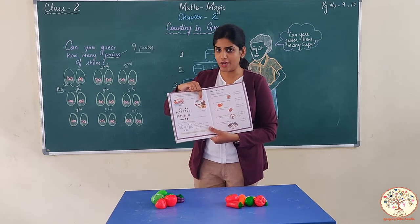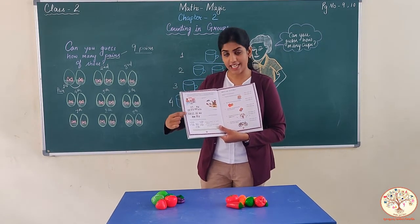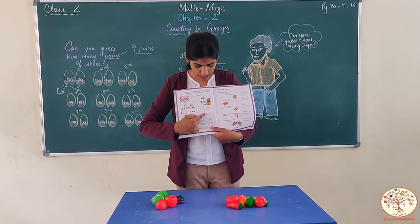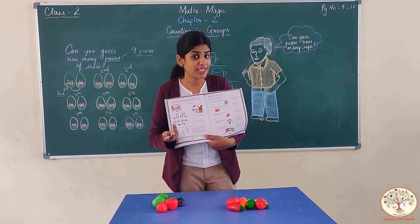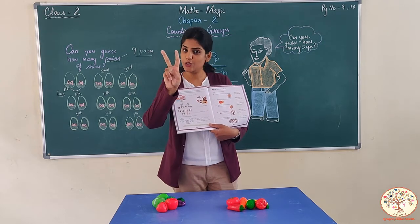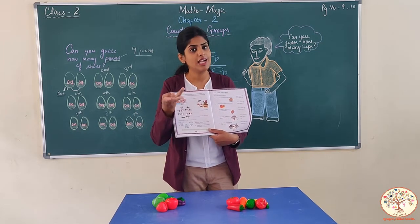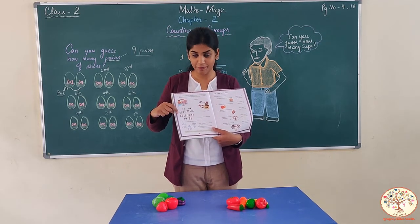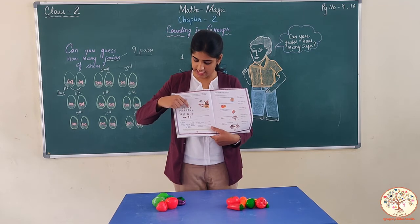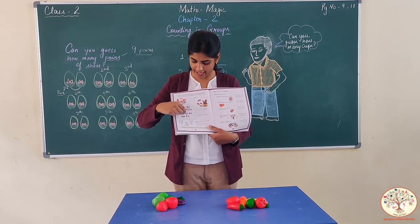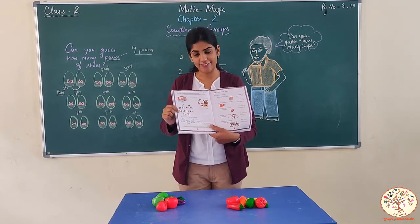Now do the next question by yourself — you have to count the number of bangles, so count in groups. Now let's check this question: here the question is pairs of earrings. Kya find out karna hai? Pairs of earrings. We just learned — two things of the same type is one pair. So count the pairs here: six, seven, eight, nine, ten, eleven, twelve. So how many pairs are there? Twelve pairs. Very good.